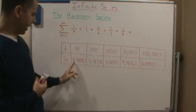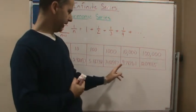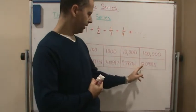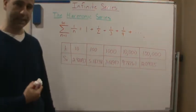And notice that the partial sum starts at about 3, then it goes to a little bit more than 5, and then it's about 7.5, almost 10, and then a little over 12. And even when you get to a million, it's a little over 14.